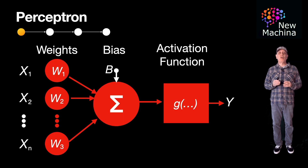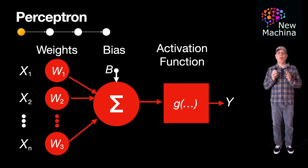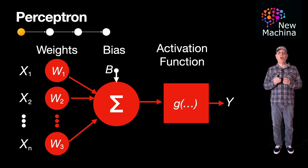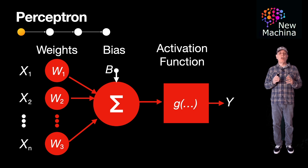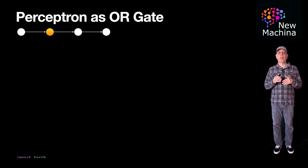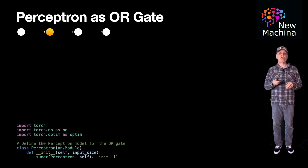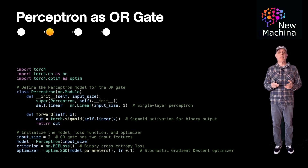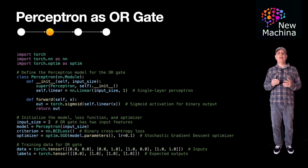To implement an OR gate using the Perceptron, we will need to train our model. Training our model will get our weights and biases to optimal values. We will see in a few minutes how we do this as we step through the code. So let's look at the Python PyTorch implementation of a Perceptron behaving as an OR gate. In this Python script, in the first few lines, you can see that the Python dependencies are imported.